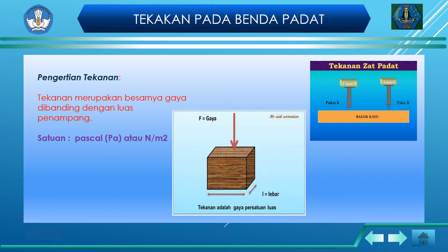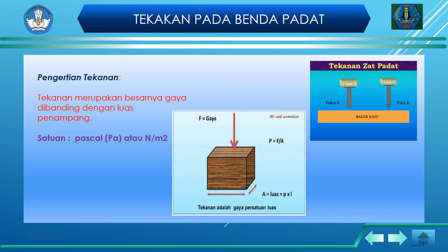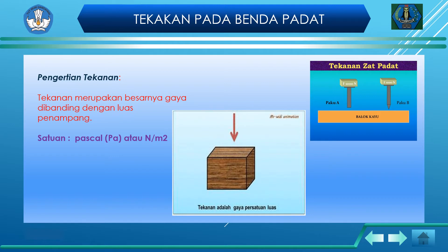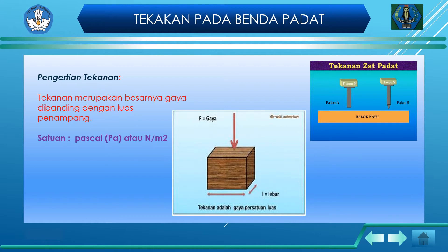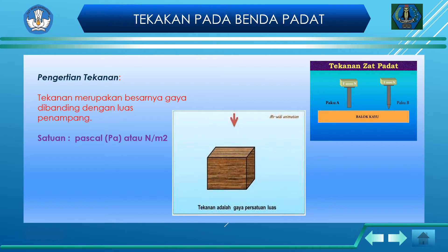Untuk memahami tekanan pada benda padat, coba kalian lihat animasi kubus coklat tersebut. Gerakan anak panah menunjukkan gaya berat yang dihasilkan oleh kubus. Besarnya tekanan yang dihasilkan merupakan gaya berat yang dimiliki oleh kubus tersebut dibagi tiap satuan luas bidang tekan pada alas kubusnya. Dengan demikian, luas bidang tekan mempengaruhi besarnya tekanan. Besarnya tekanan berbanding lurus dengan besarnya gaya yang bekerja, dan berbanding terbalik dengan luas bidang tekan.